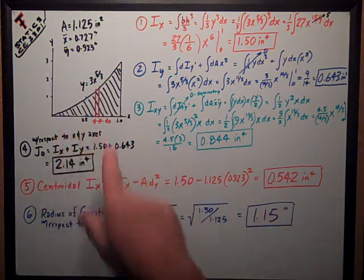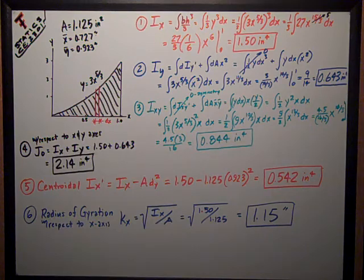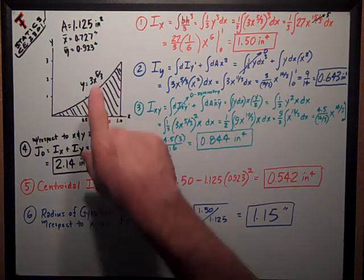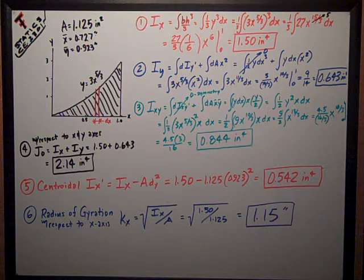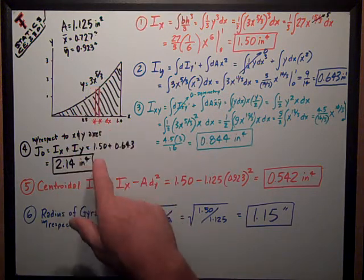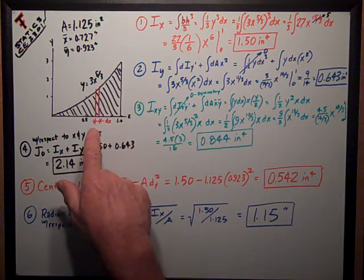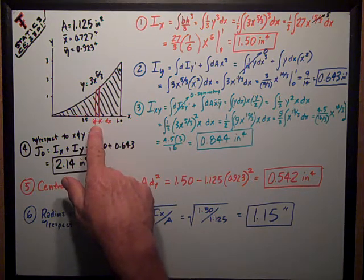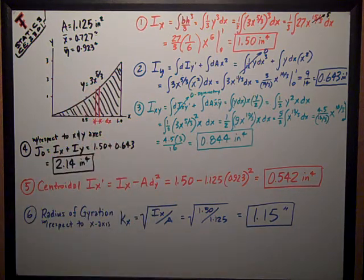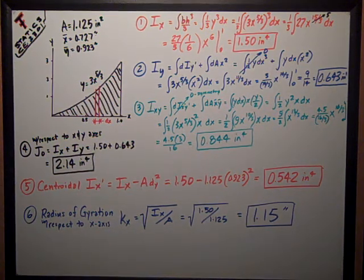As usual, when we have an axis bounding one side, we take a strip perpendicular to it, in this case a vertical strip of dimensions dx width by y high. That's dA, the little area of that strip that we're going to integrate.